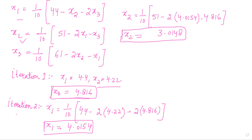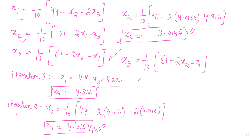With x2 equal to 3.0148 and x1 equal to 4.0154, we obtain x3: x3 equals one-tenth of (61 minus 2 times x2 minus x1), that is one-tenth of (61 minus 2 times 3.0148 minus 4.0154). Solving, x3 comes out equal to 5.0955.